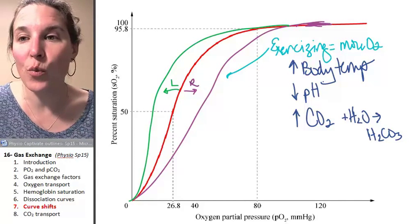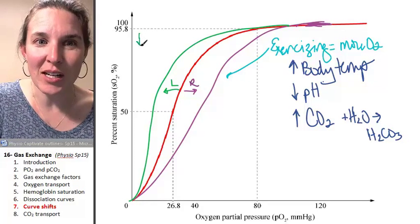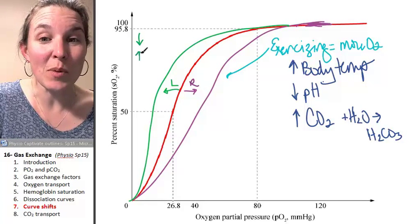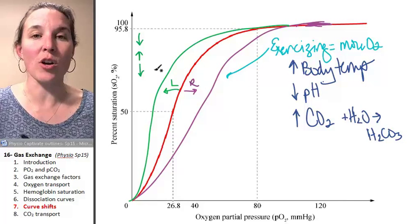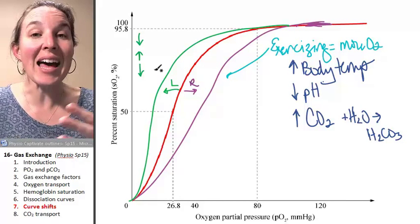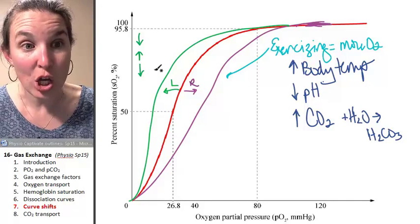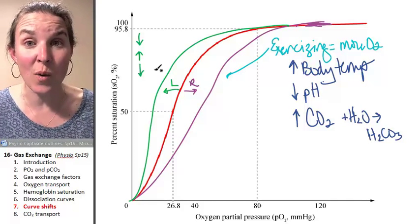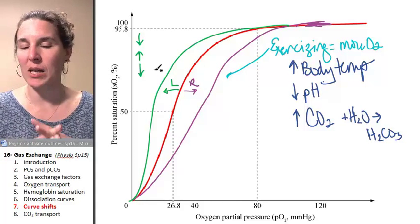Flip them. If we want to know how to shift our curve to the left, decrease body temperature, increase pH, decrease carbon dioxide, done. And we shift our curve to the left. In that scenario, we hang on to the oxygen more. You're less likely to let it go and give it up to your cells, and we can think about all sorts of applications for that.